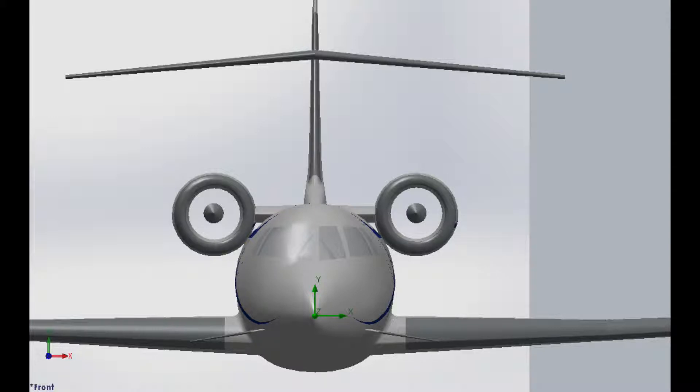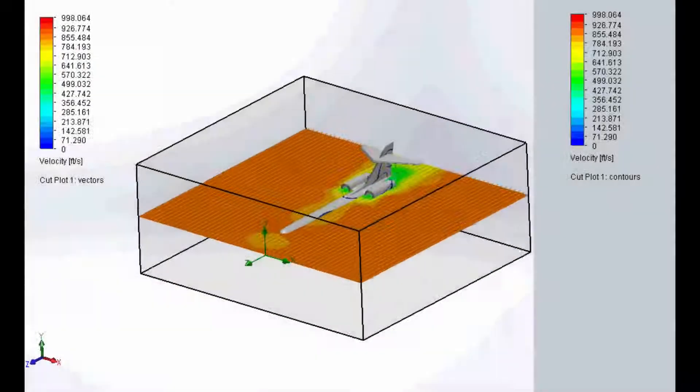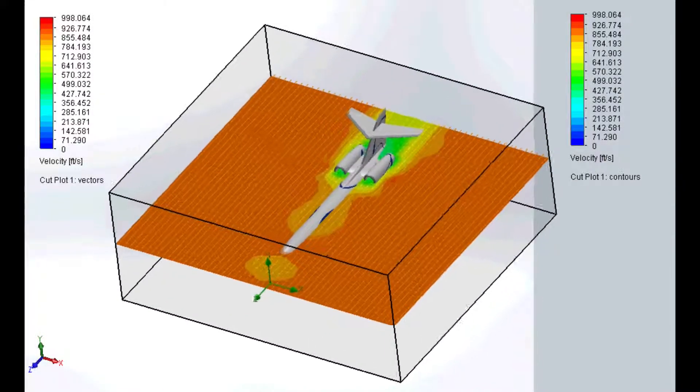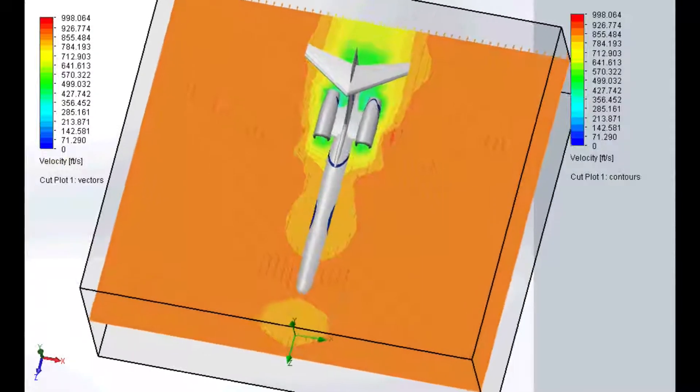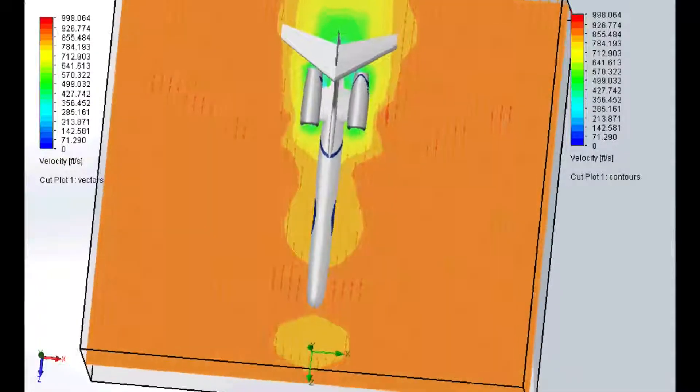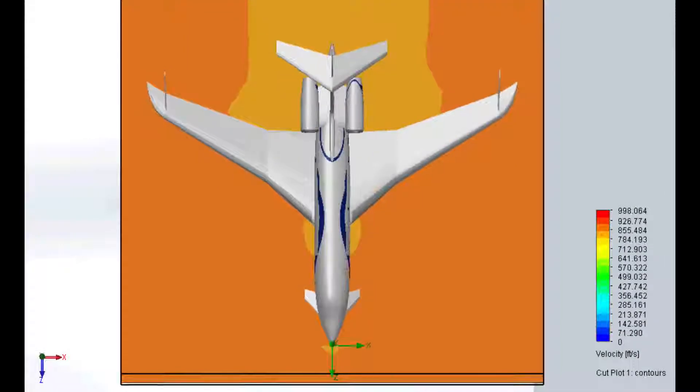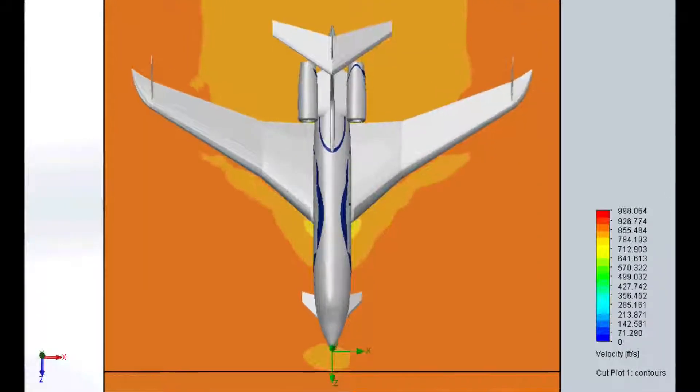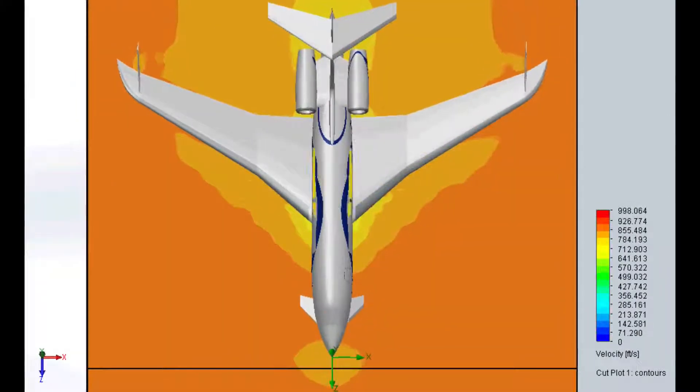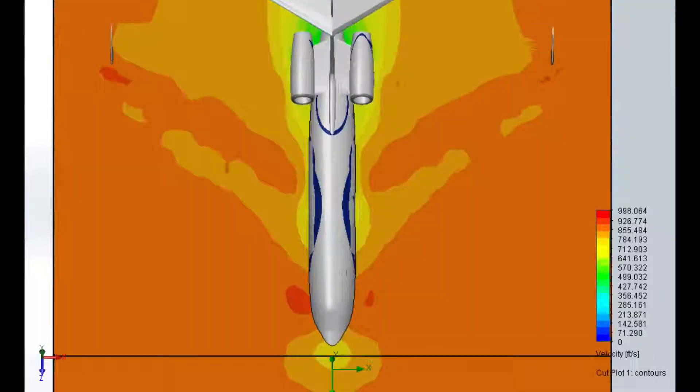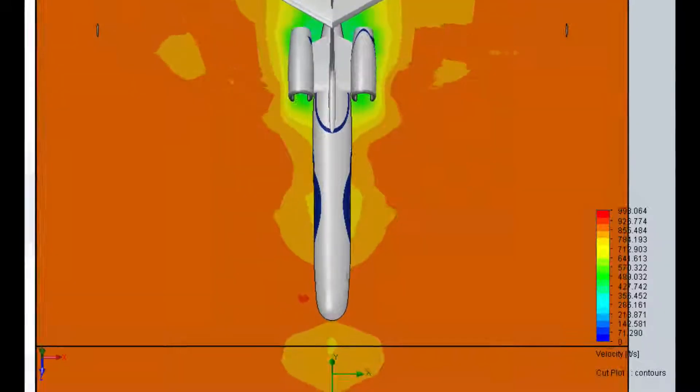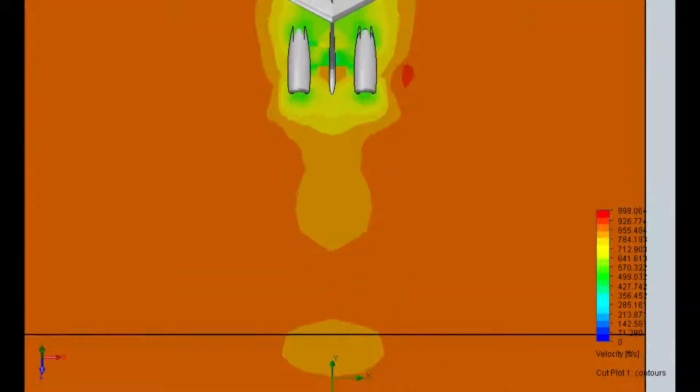First, we're going to look at this view. It is a cut plot of velocities. Free stream air is of 580 miles per hour. And as the cut plot moves up from the bottom of the aircraft to the top, you can see that the engines actually slow down the airstream down to about 580 feet per second or 400 miles an hour. That is a considerable drop of velocity.